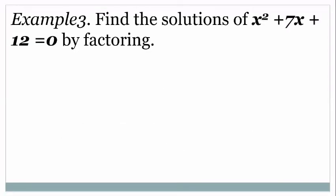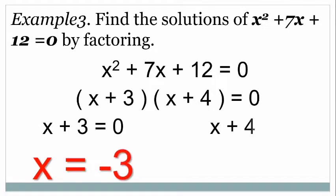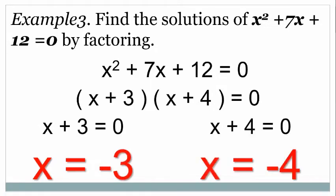Let's have another example: find the solutions of x squared plus 7x plus 12 equals zero by factoring. We need to find two factors of 12 whose sum is 7. Those factors are 3 and 4, giving us (x + 3)(x + 4) = 0. Applying the zero product property: x + 3 = 0 gives x = −3, and x + 4 = 0 gives x = −4. These two are the solutions of x squared plus 7x plus 12 equals zero.